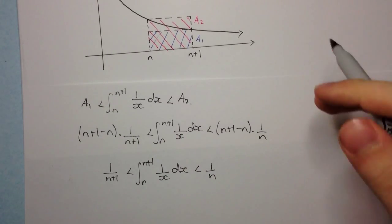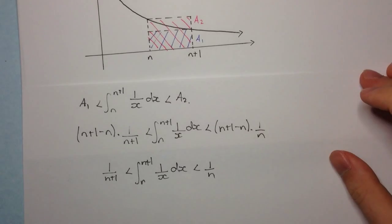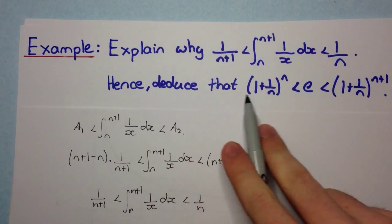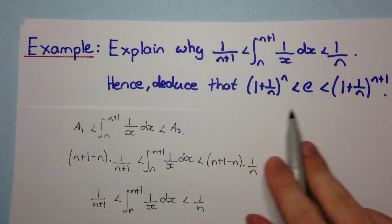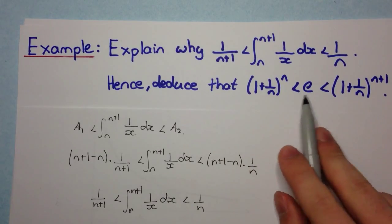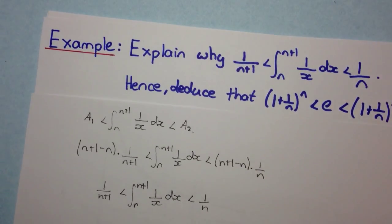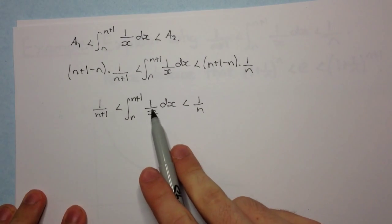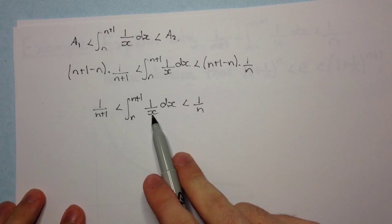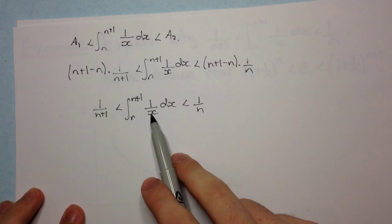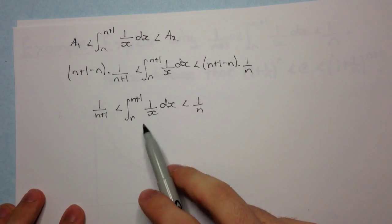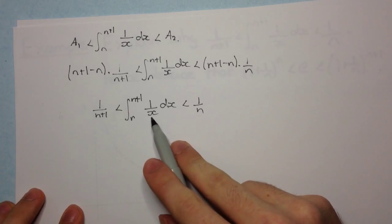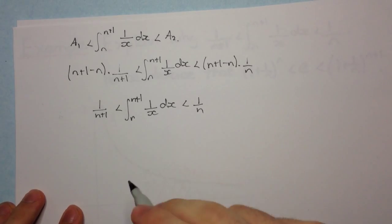So here we've shown what we need to show in the first part. For the second part, we need to deduce bounds for e. Now that we see we need bounds for e, we should recognize that the integral of 1 over x is the natural log, and since the natural log is in base e, we think to ourselves that maybe we need to find the value of this integral.